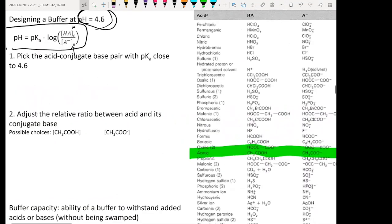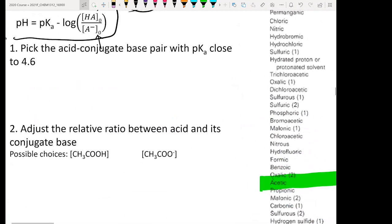Therefore, you now pick the conjugated acid-base pair based on their pKa, right? So we now want to pick HCOOH and HCOO-.